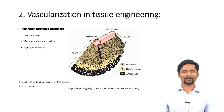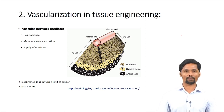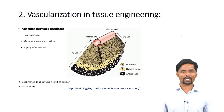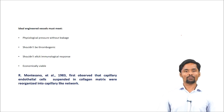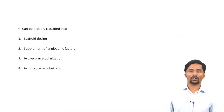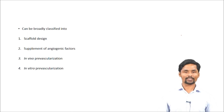As we all know, vascular networks mediate gas exchange, excrete metabolic waste, and supply nutrients. If we prepare a scaffold without a vascular network, diffusion will take place, but diffusion is limited to 100–200 micrometers. Beyond that, cells starve of nutrients and oxygen and eventually die. Hence, it is necessary to include a vascular network when designing the scaffold. The ideal engineered vessels must withstand physiological pressure without leakage, must not be thrombogenic, must not elicit any immunological response, and must be economically viable. Strategies are broadly classified into four categories: scaffold design, supplement of angiogenic factors, in vivo prevascularization, and in vitro prevascularization.